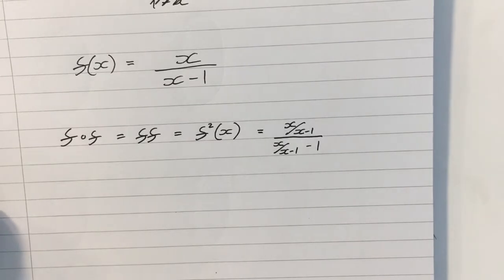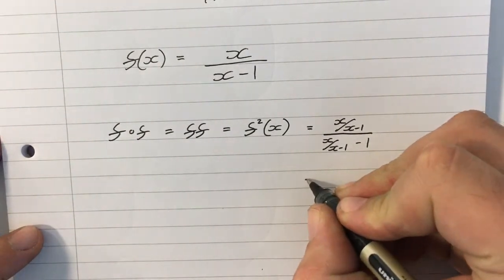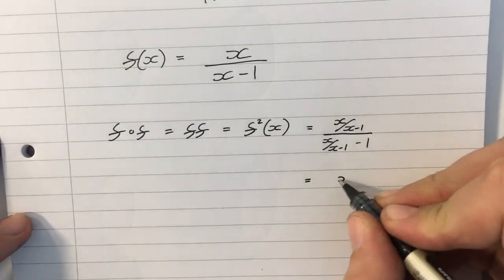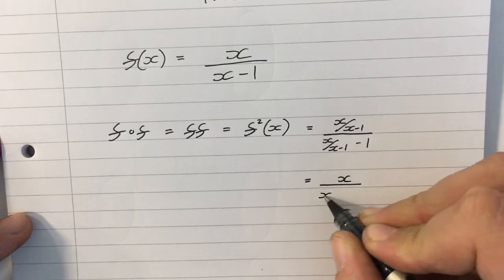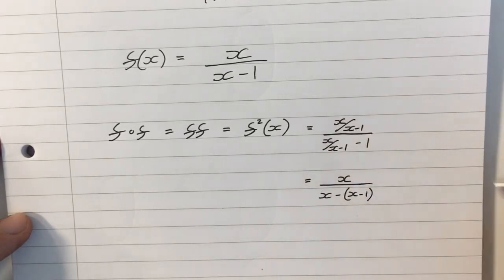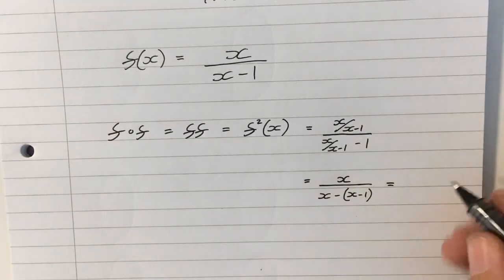Now, this particular example looks a little bit messy, because I've got fractions in fractions, but I can multiply top and bottom of the big fraction by x minus 1, and that will give me x over x minus x minus 1, which will be just x.